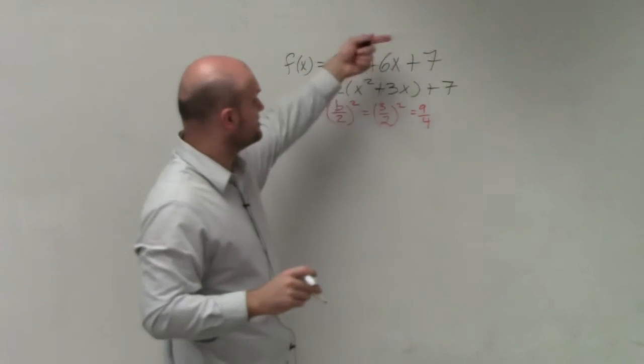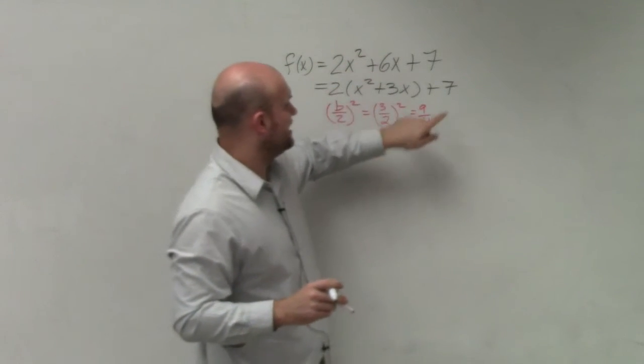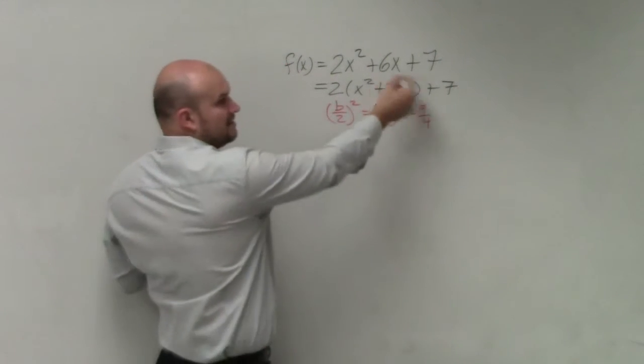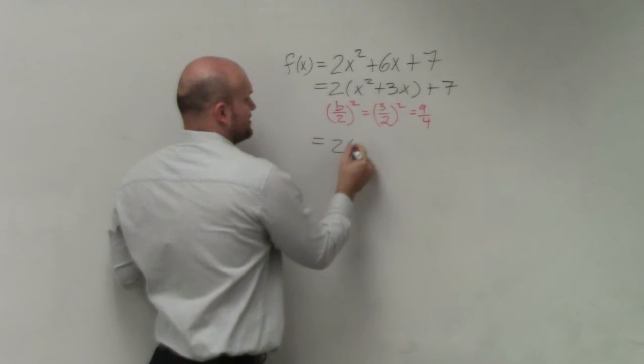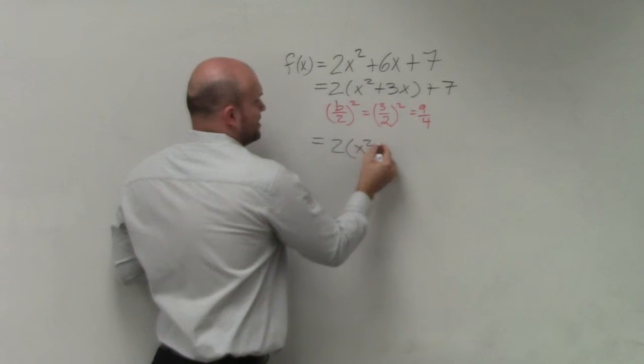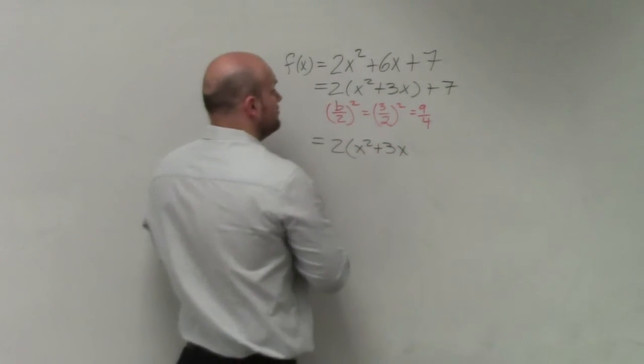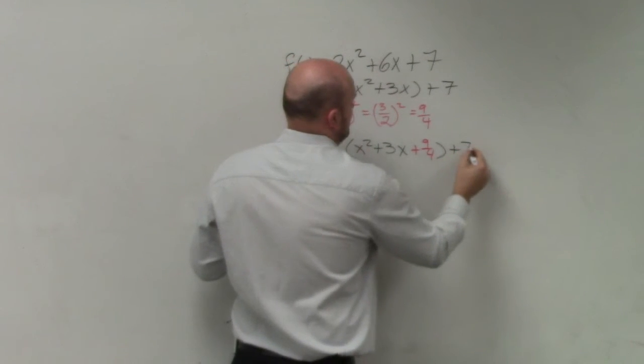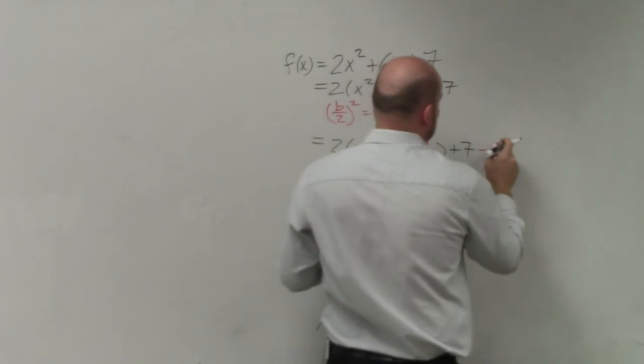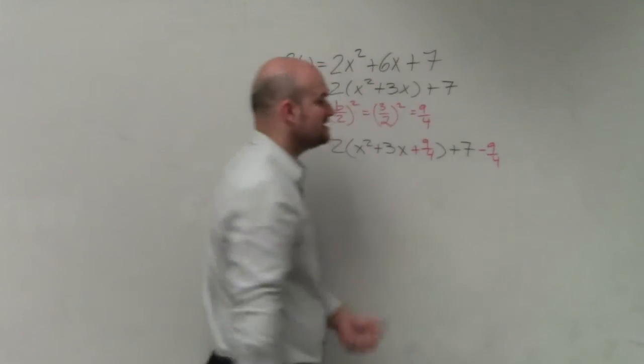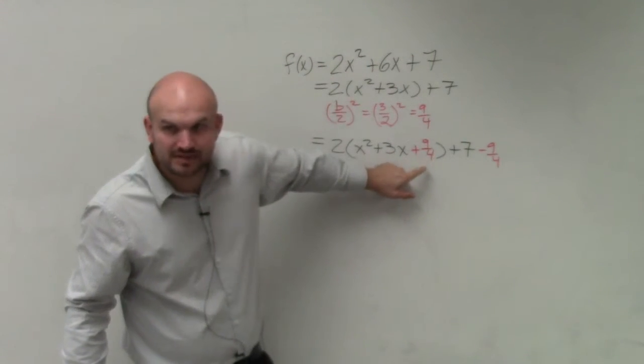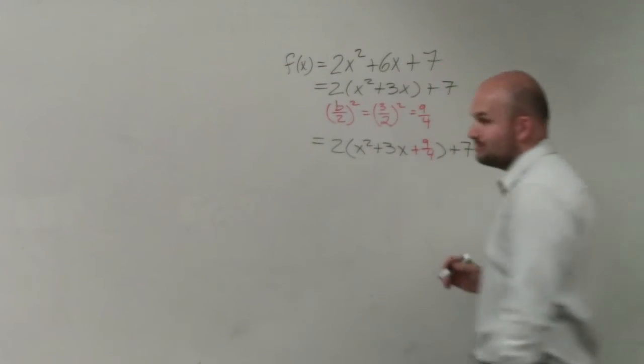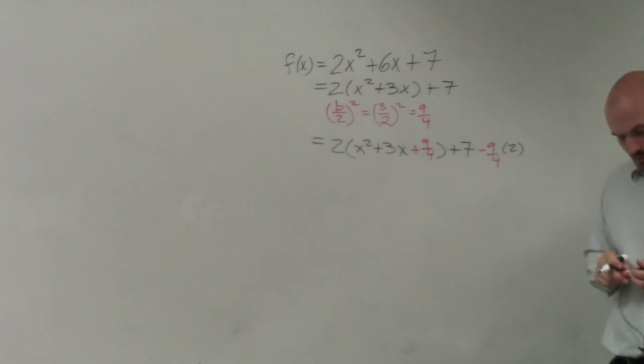Now, we add the 9 fourths inside the parentheses, and we have to now subtract the 9 fourths outside of the parentheses, right, because you can't just add the number. So we do 2, then we have x squared plus 3x plus 9 fourths, and then minus 9 fourths. But please realize that I'm not adding a 9 fourths, actually. I'm adding a 9 fourths that's being multiplied by 2. So over here, I have to multiply 9 fourths by 2.